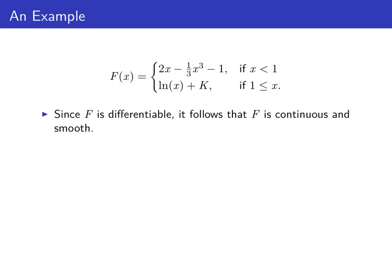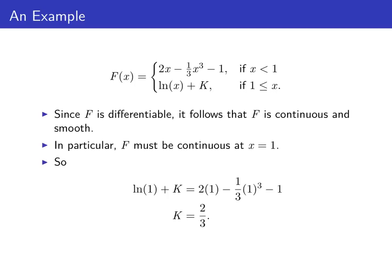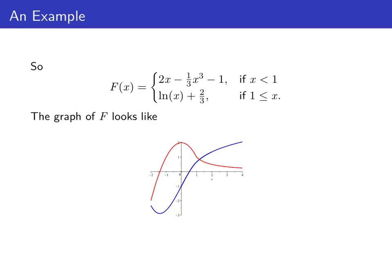A differentiable function is continuous and smooth, so in particular big F must be continuous at x equals 1. The left-hand limit of F at 1 is 2 times 1 minus 1 third times 1 cubed minus 1, and the right-hand limit is the natural log of 1 plus k. Setting those equal and solving for k gives us k equals 2 thirds. So big F is 2x minus 1 third x cubed minus 1 if x is less than 1, and the natural log of x plus 2 thirds if x is bigger than or equal to 1.